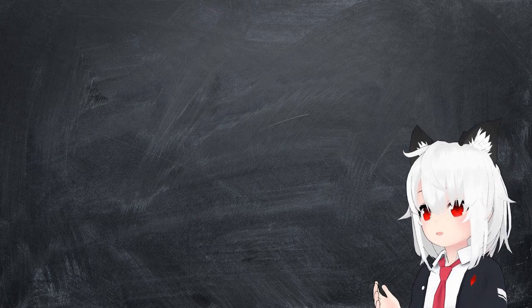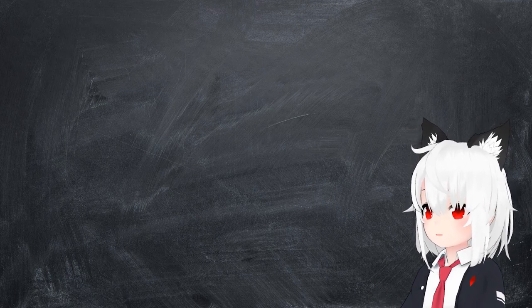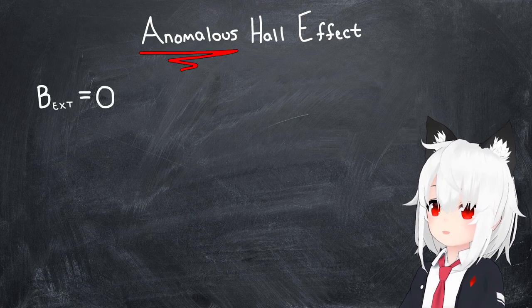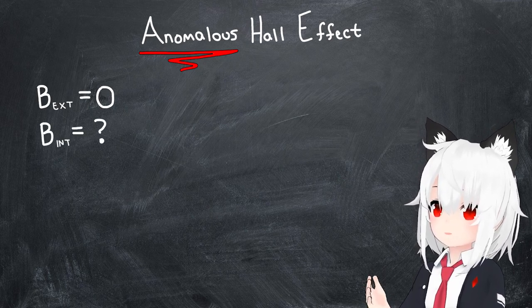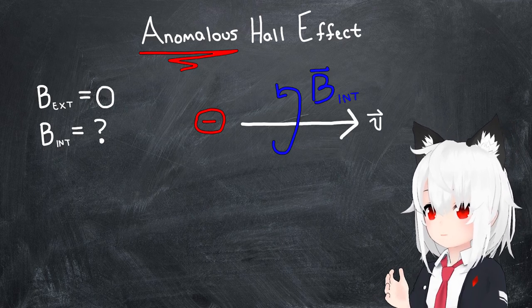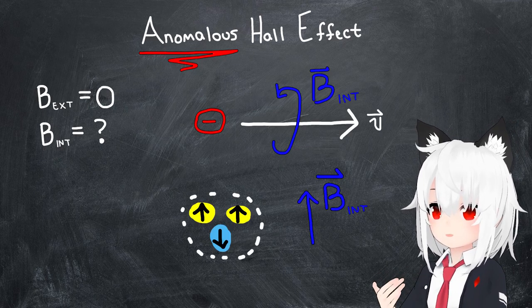One initial guess you might make to attempt to explain it might be that while there's no externally applied magnetic field, there is still some internal magnetic field coming from the motion of the electrons or maybe the spins of the constituent particles.